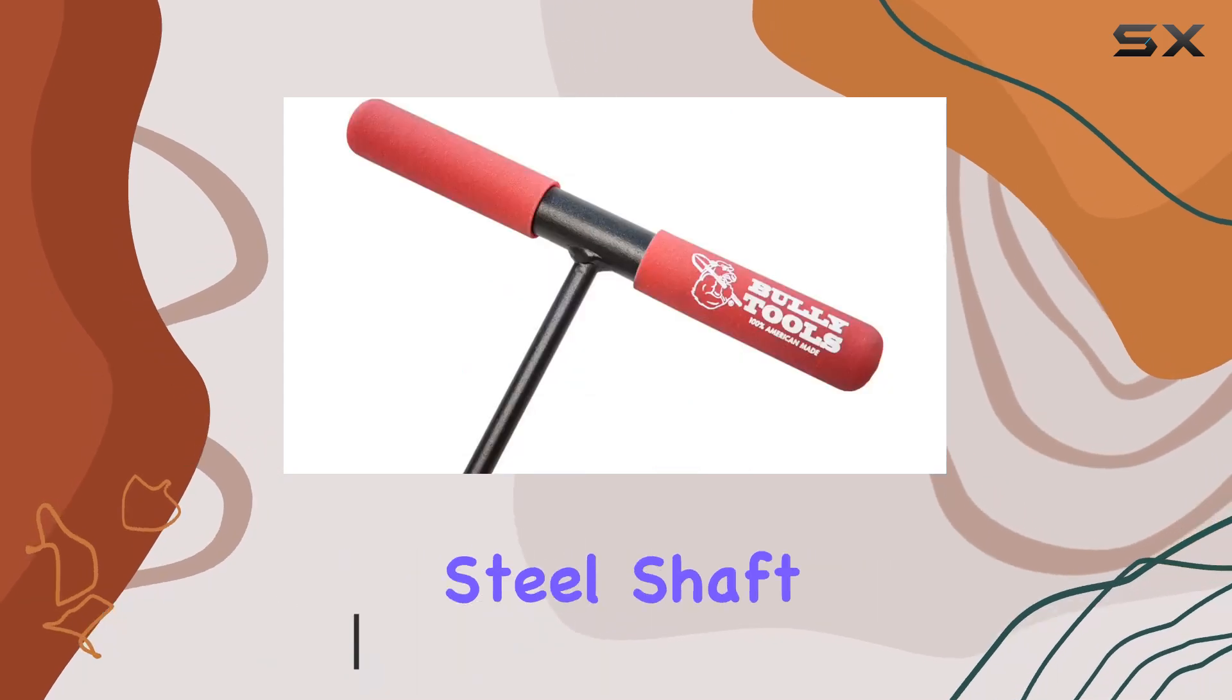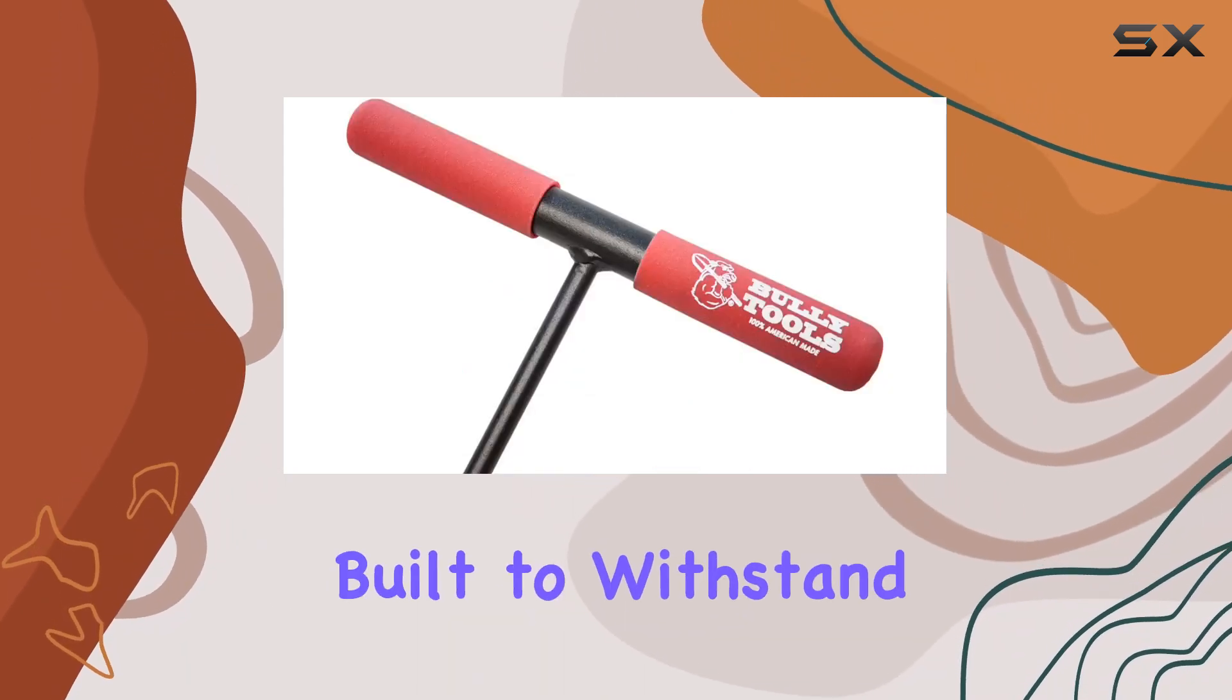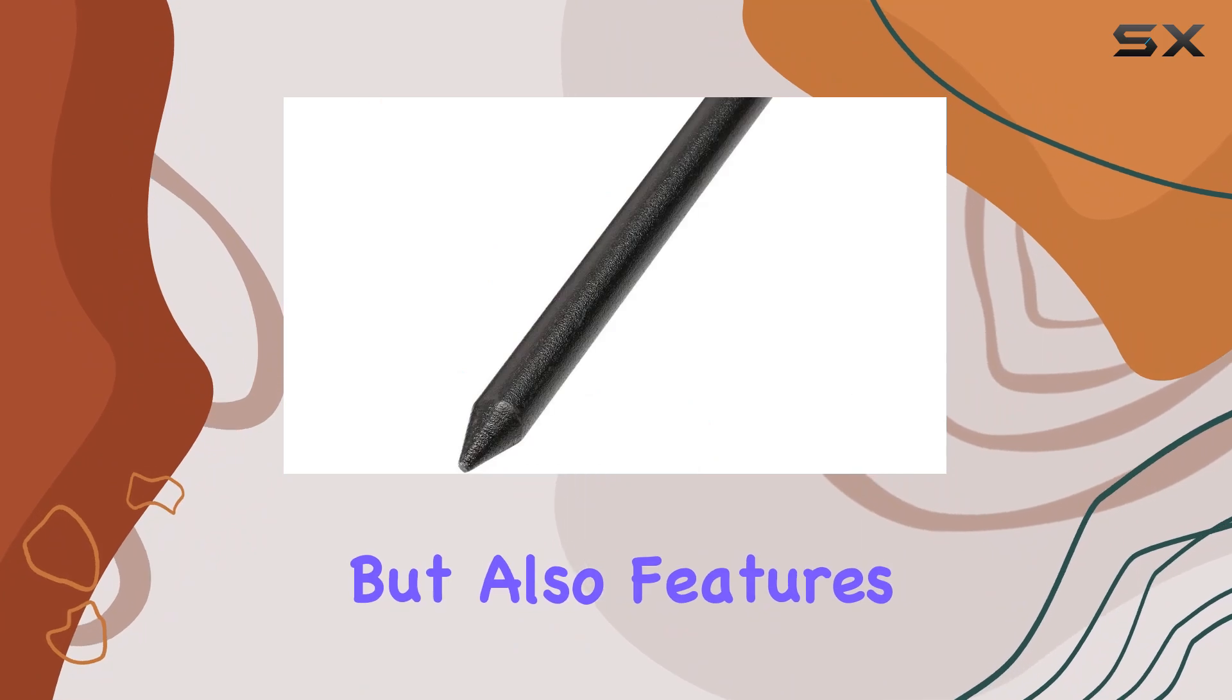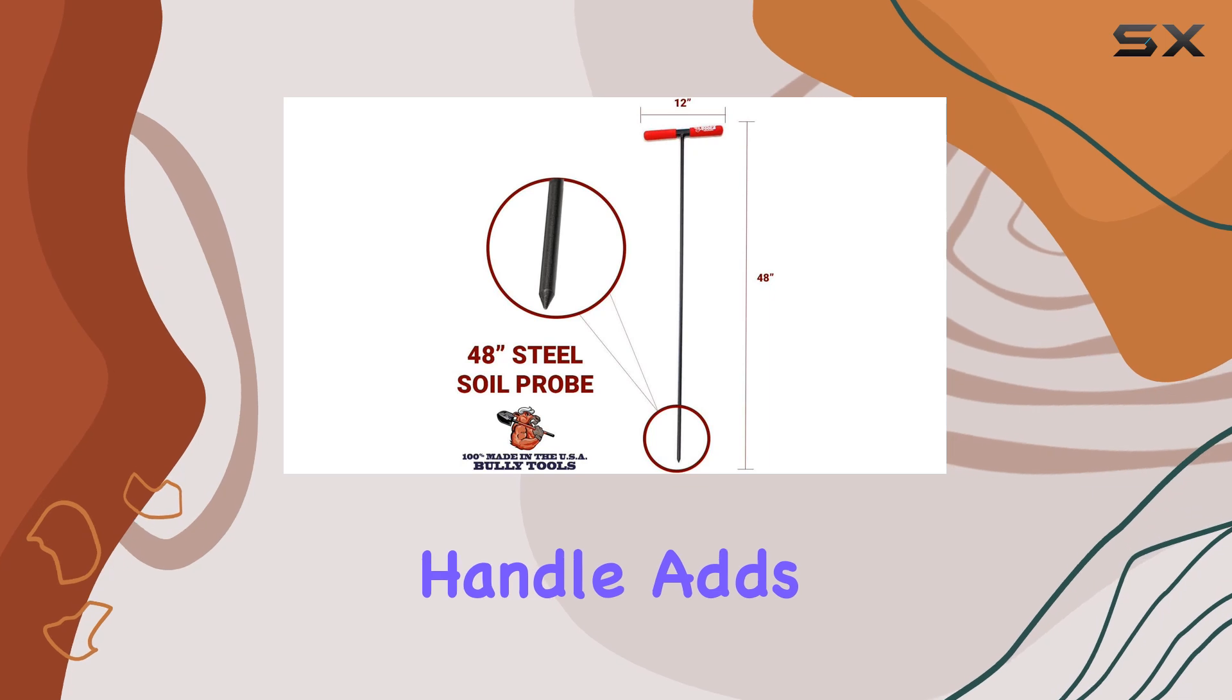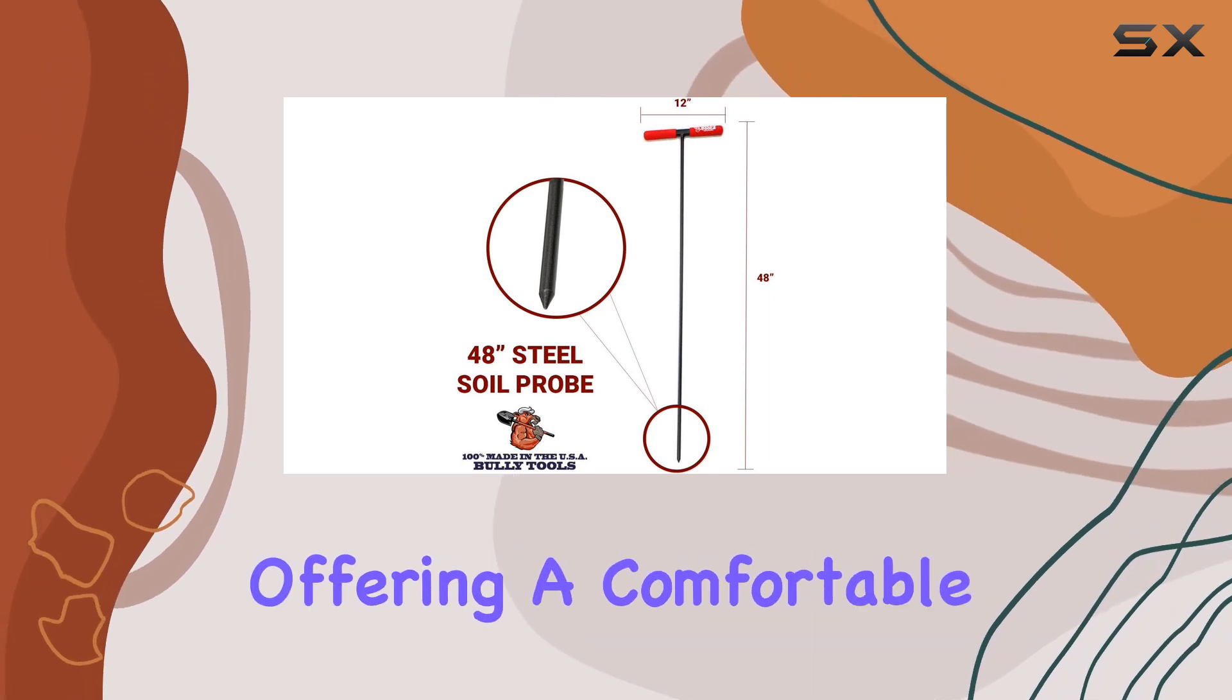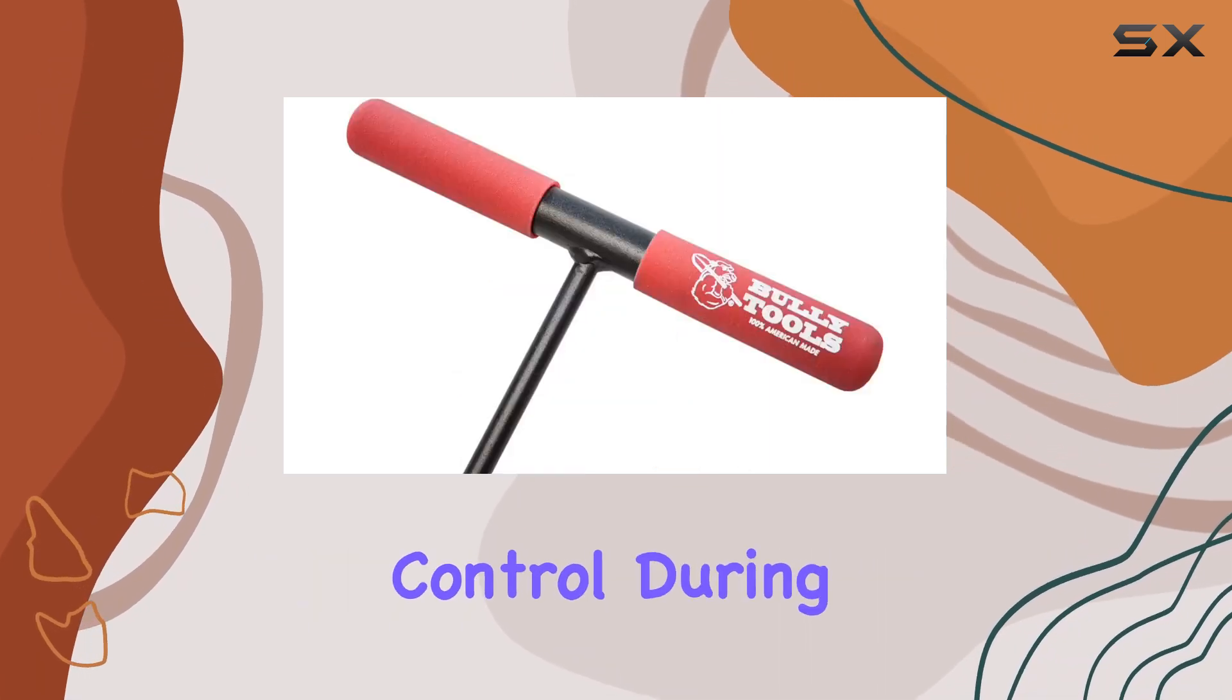The 1-2 inch diameter steel shaft is not only built to withstand rigorous use, but also features a sharpened tip for easy penetration into the soil. The steel T-style handle adds to its usability, offering a comfortable grip that enhances control during use.